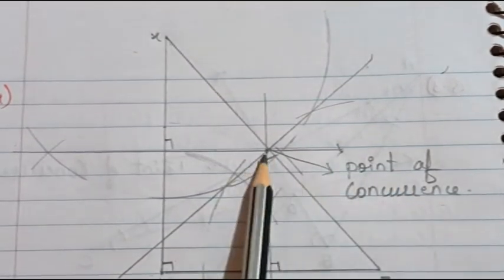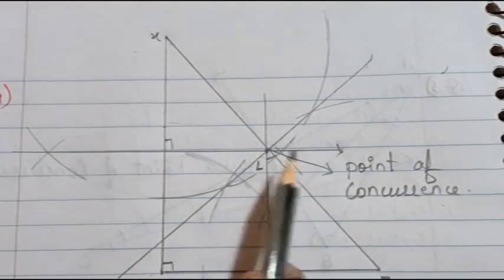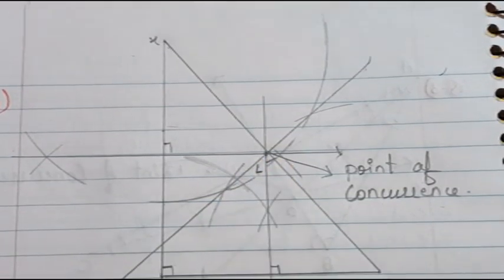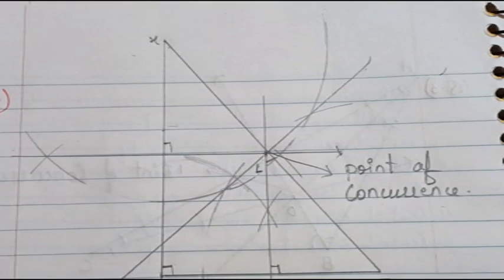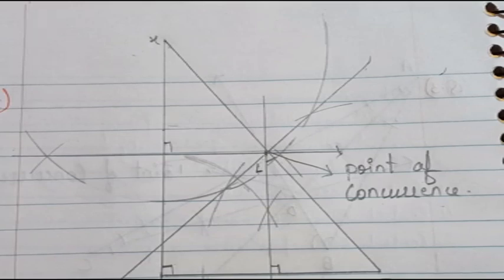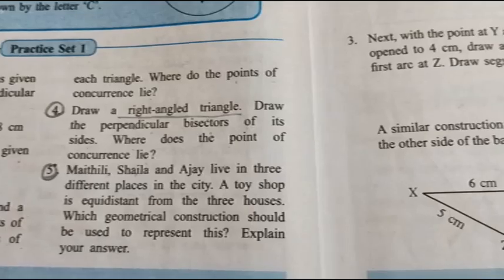This point lies inside the triangle. So we will write: the point of concurrence lies inside the right angled triangle. That is the answer to question number four.